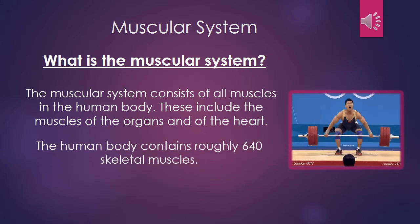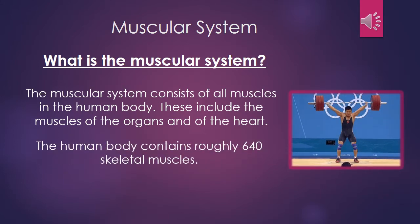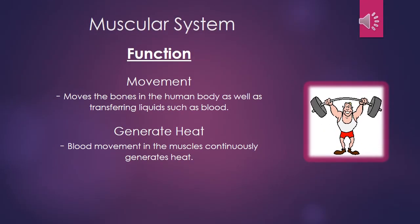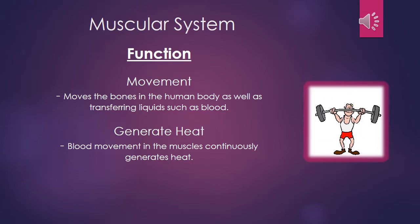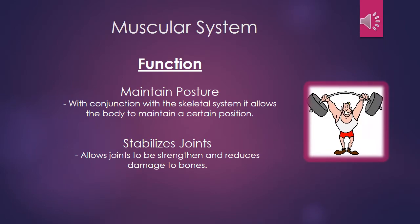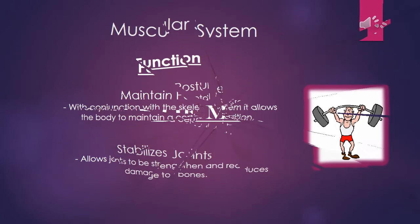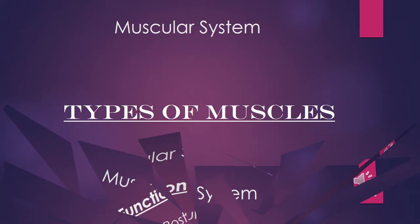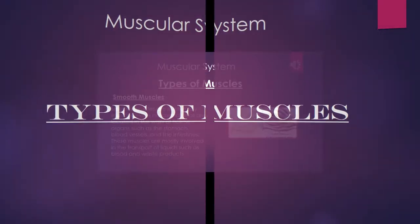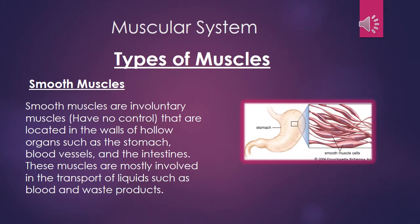The human body contains roughly 640 skeletal muscles. The functions of the muscular system include providing movement and generating heat. The muscular system also maintains posture and stabilizes joints.